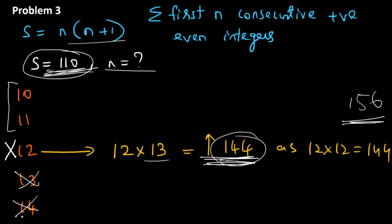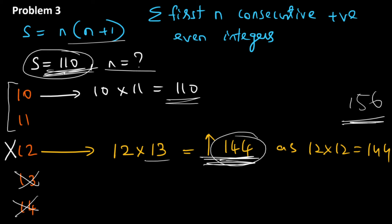So we can eliminate options 12, 13, and 14 — putting 13 gives an even greater value, not equal to 110. We are left with two options: 10 or 11. It's easiest to try n = 10 because multiplying by 10 is simple: 10 × 11 = 110. That's correct! Therefore the correct answer is option A, n = 10.